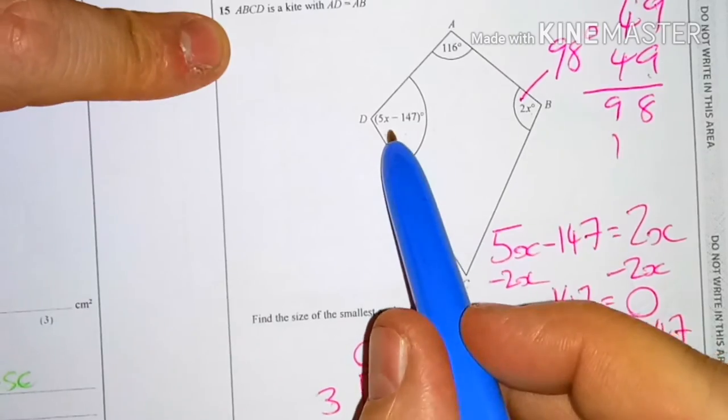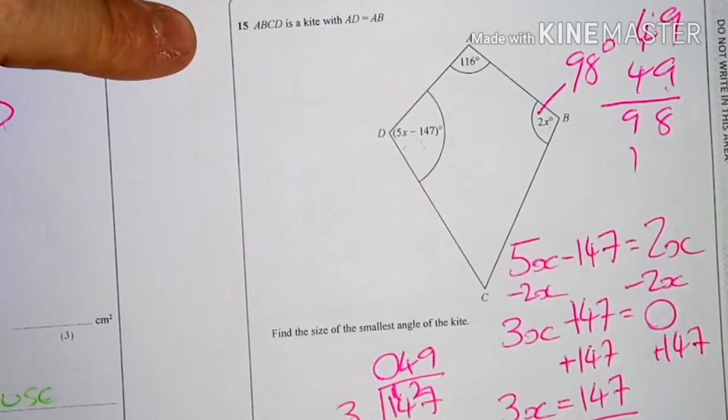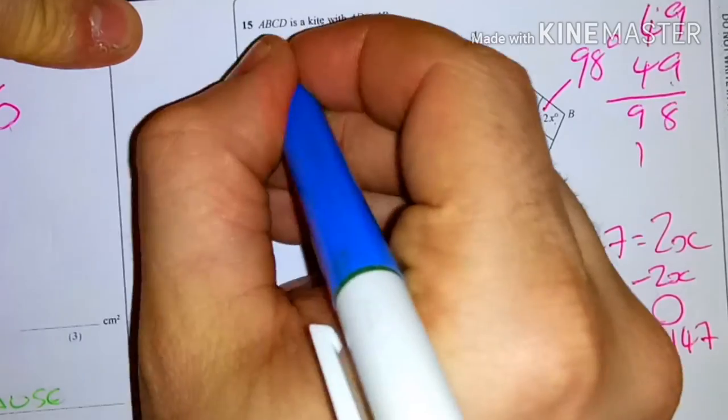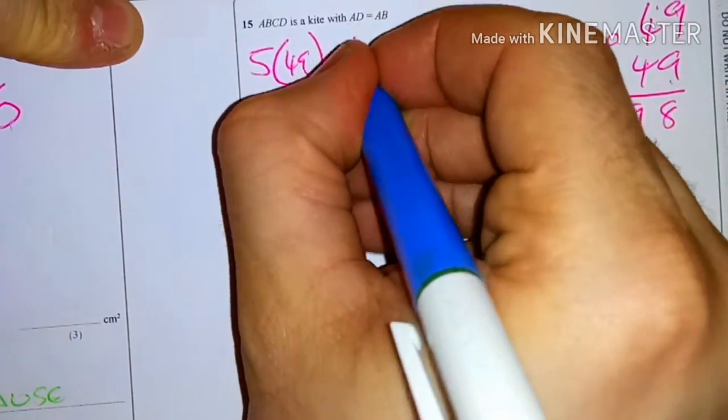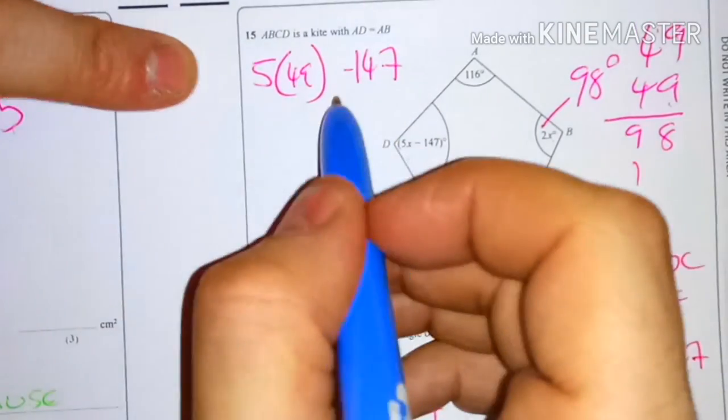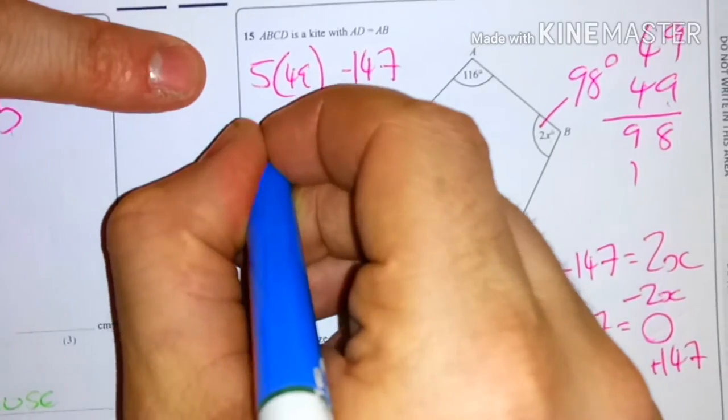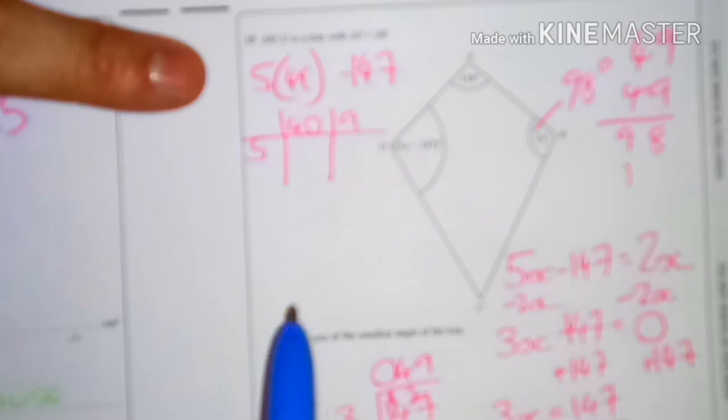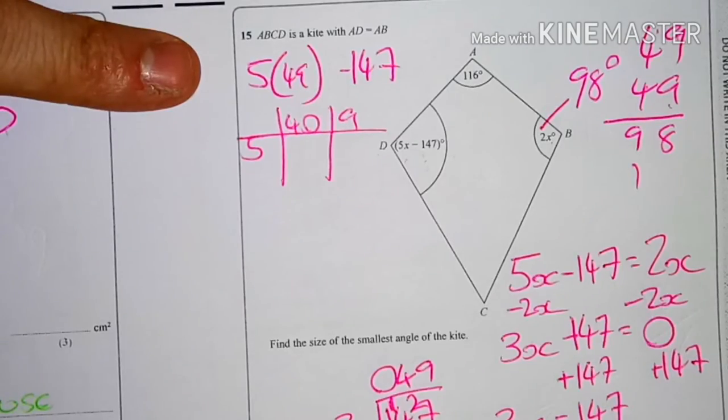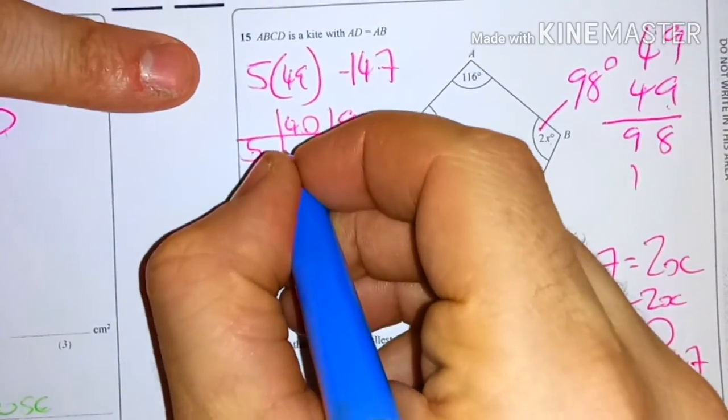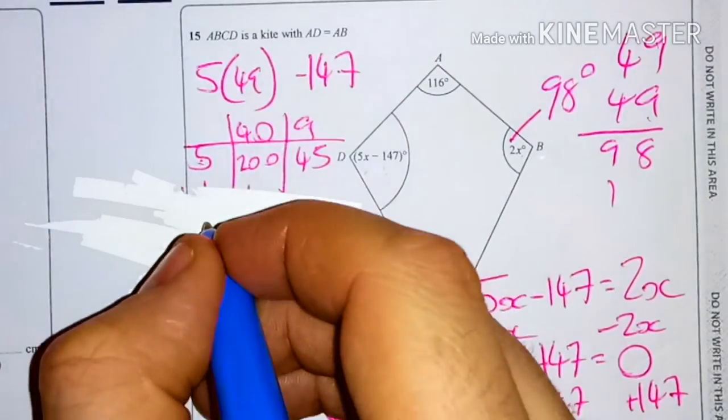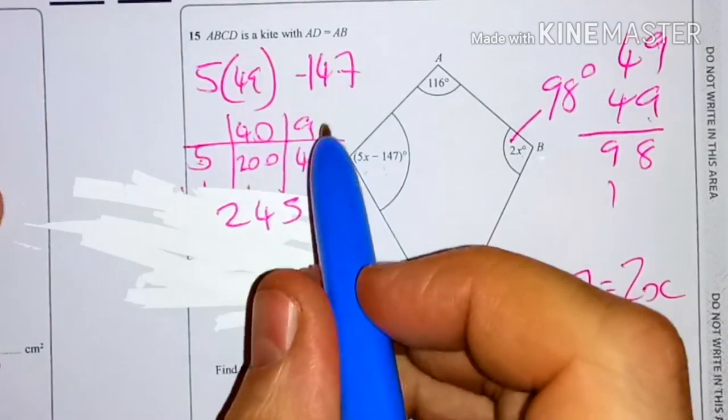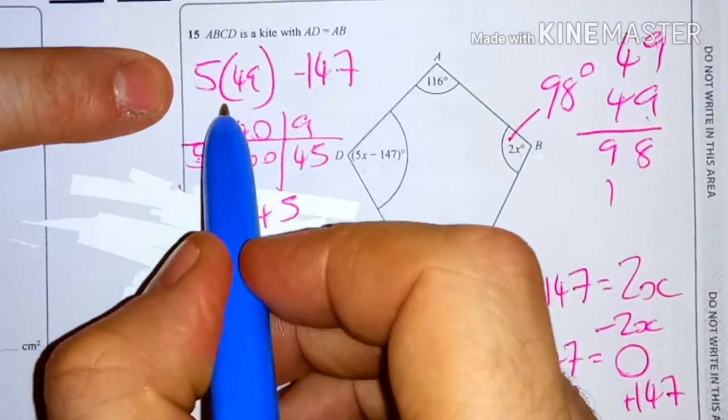This one here is 5x minus 147, so we have to do 5 times my value of x, which is 49, minus 147. 5 times 49 I can't do off the top of my head, so I'm going to split it up into my grid method: 40 and 9. You may think this is a lot of working out, but I'd rather do it properly than mess up. 5 times 40 is 200, 5 times 9 is 45, and together you get 245.